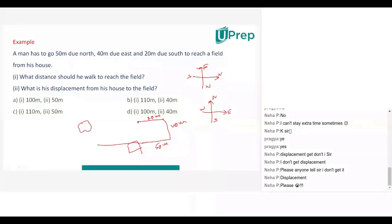We have to find out what distance he walked to reach the field. From A to B he moved first — 50 meters north. From B to C — 40 meters east. From C to D — 20 meters south. Total distance you have to add: AB = 50 meters, BC = 40 meters, CD = 20 meters. So 50 plus 40 plus 20 equals 110 meters. Distance traveled will be 110 meters.